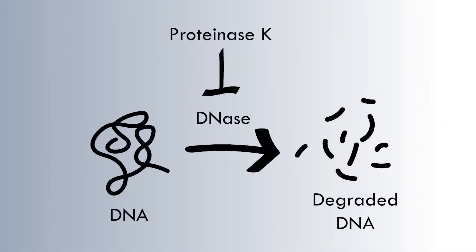And it also breaks down enzymes that are called DNases. And those DNases break down DNA. So our proteinase K helps to protect DNA by preventing it from being broken down from DNases.